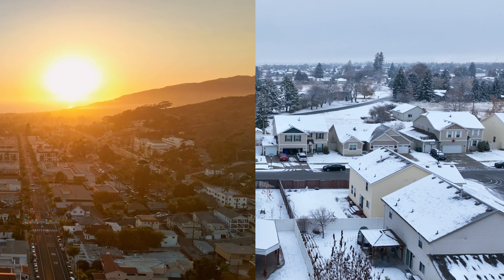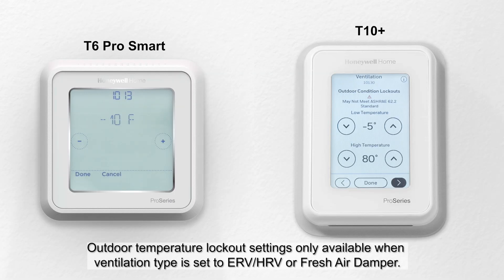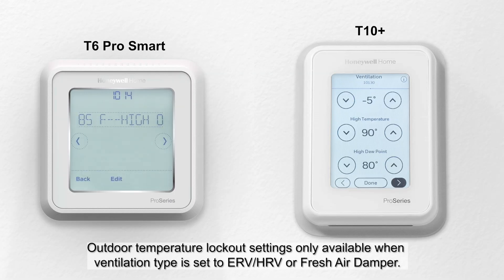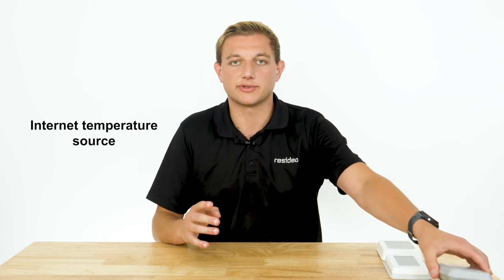To prevent uncomfortable air from entering the home, optional outdoor lockout conditions include locking out ventilation when outdoor temperatures fall below or rise above set temperatures and high dew points. All outdoor temperature lockout settings require an outdoor temperature reading, which can come from a wired or wireless outdoor temperature sensor or an internet temperature source.